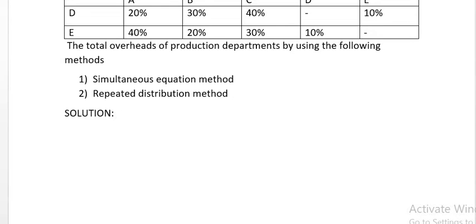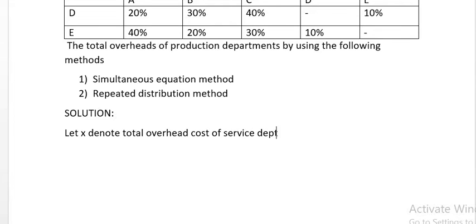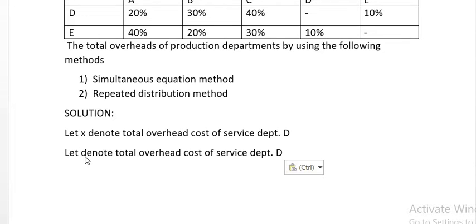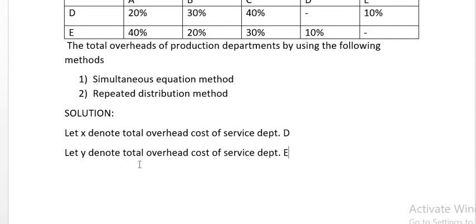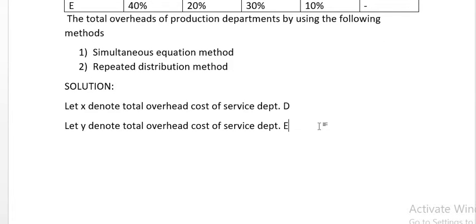First method is the Simon-Tensley equation method. Let X denote the total overhead cost of service department D, and let Y denote the total overhead cost of service department E.